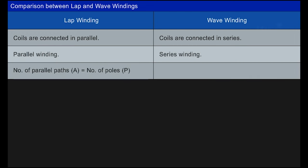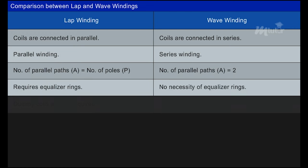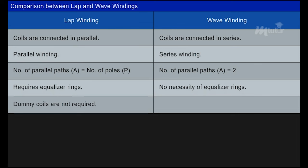In lap winding, the number of parallel paths A is equal to the number of poles P, whereas in wave winding the number of parallel paths A is equal to 2. Lap windings require equalizer rings for better commutation, but wave windings do not. Dummy coils are not required in lap windings but may be used in wave windings.